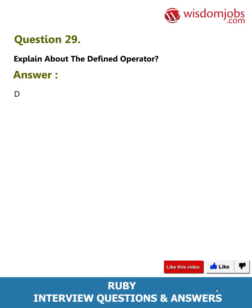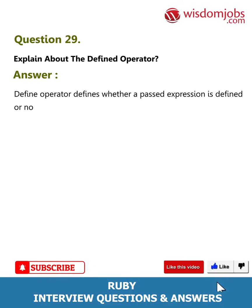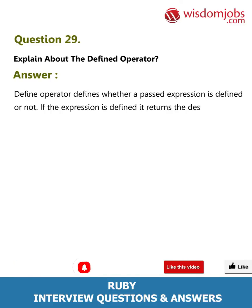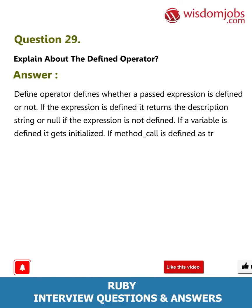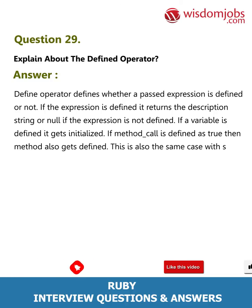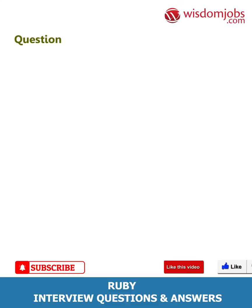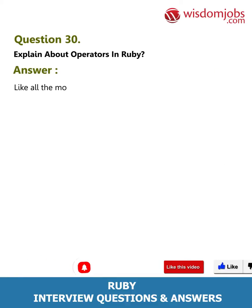Question 29: Explain about the defined? operator. Answer: The defined? operator checks whether a passed expression is defined or not. If the expression is defined, it returns a description string; if not, it returns null. If a variable is defined, it gets initialized. If method_call is defined as true, then the method also gets defined. This is also the same case with super and yield.